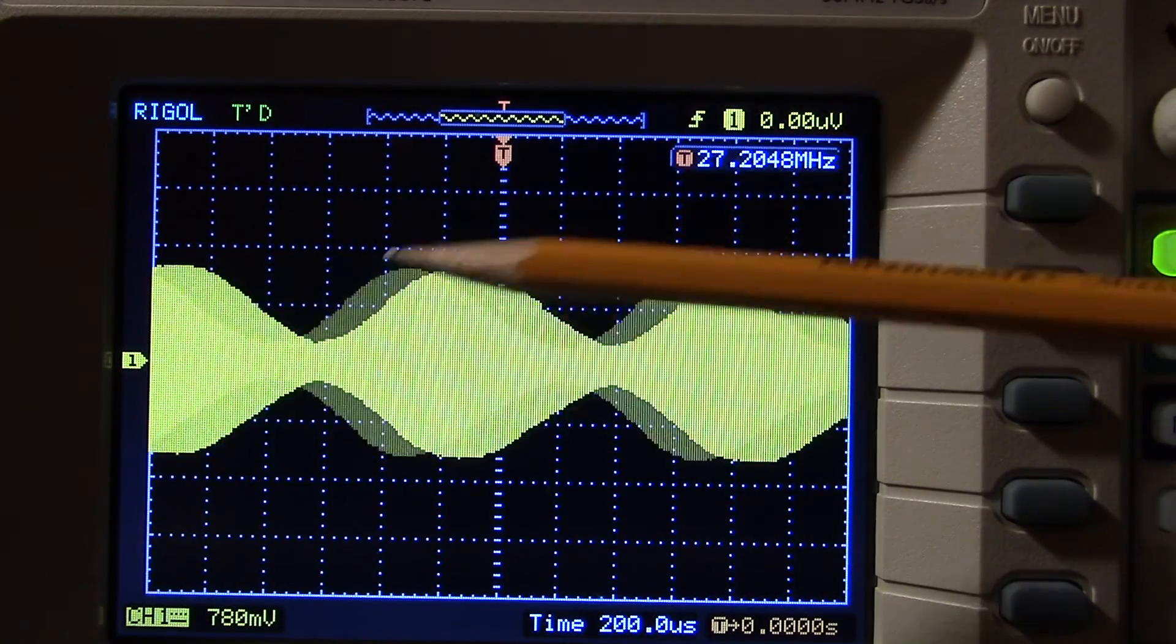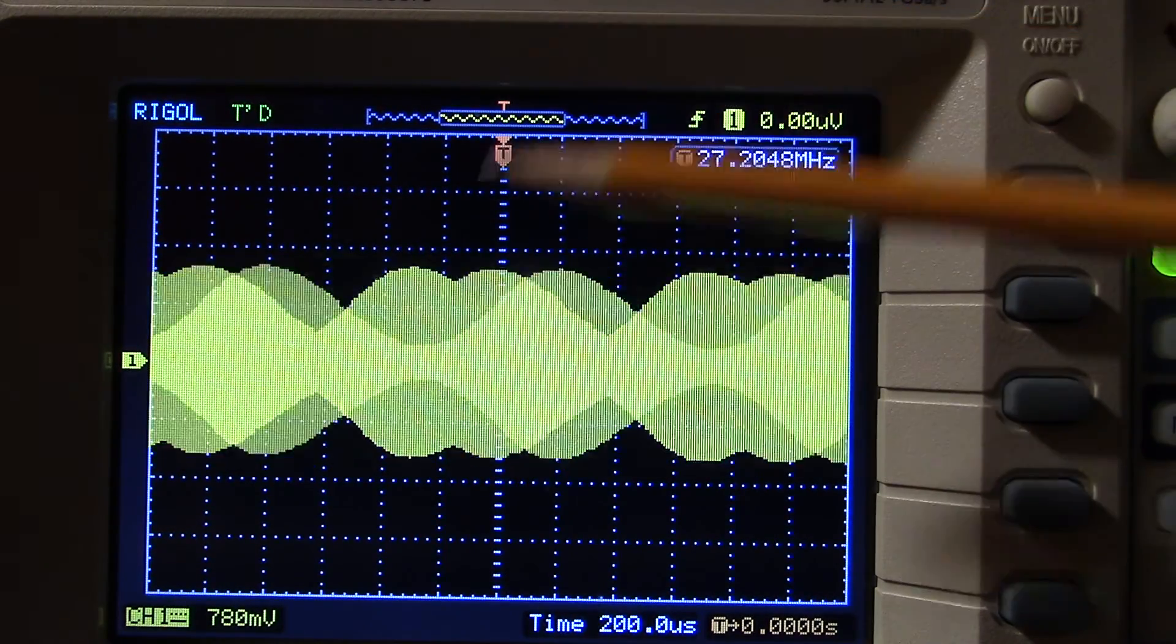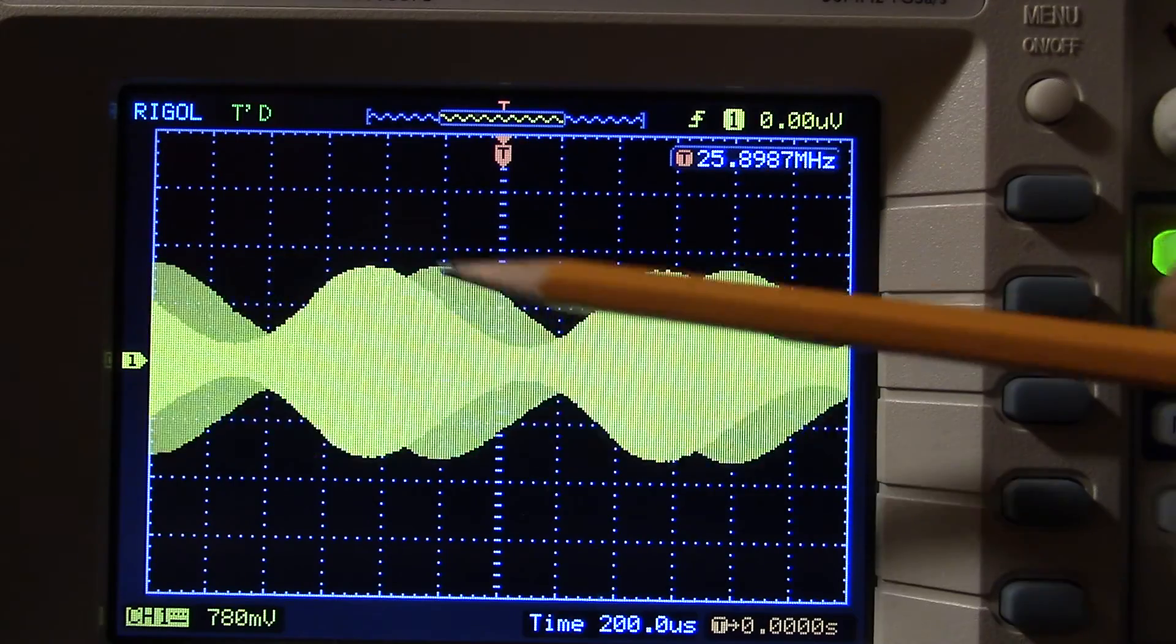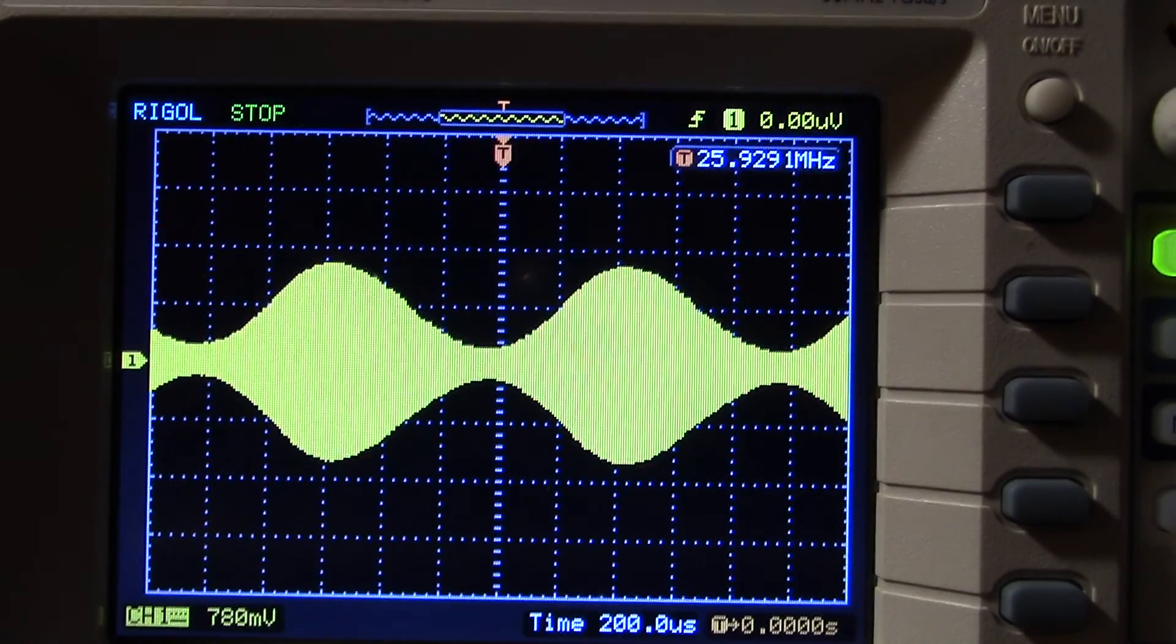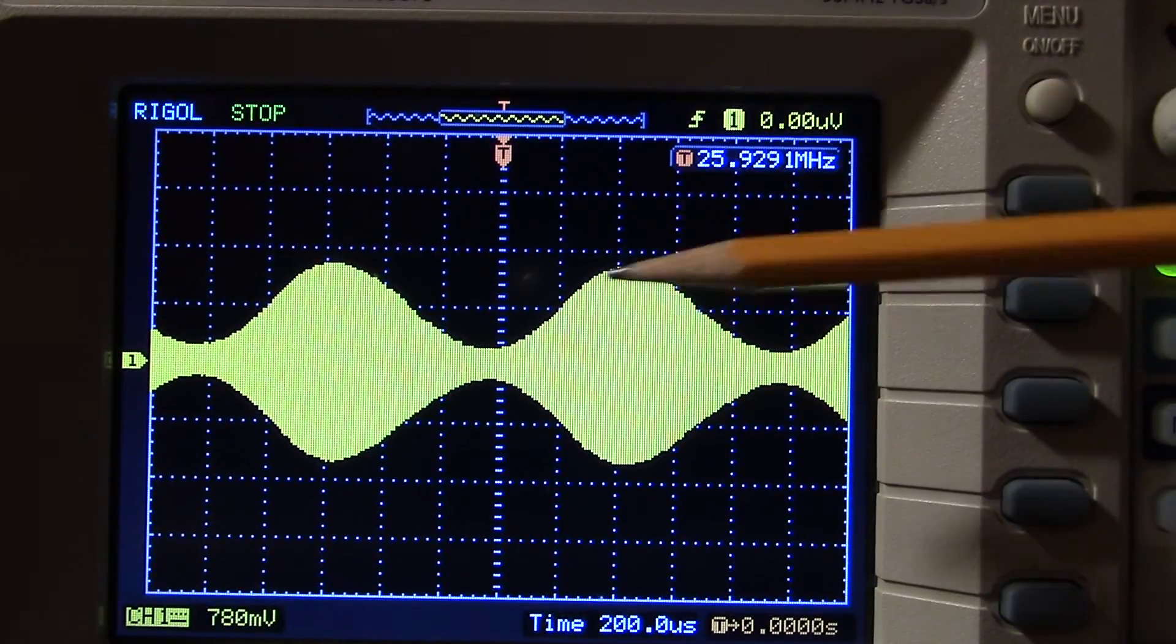This right here is called your envelope. You hear about PEP, peak envelope power. Well, this is your envelope right there. I'm going to pause that. This right here is your envelope.